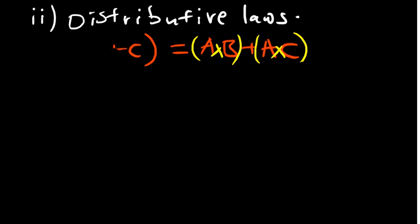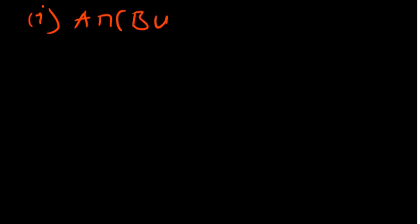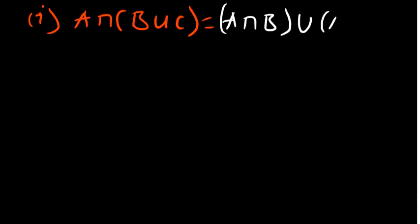I'm going to show one distributive law and you can work on the other one. For the first distributive law, we have A intersection B union C on one side, and on the other side A intersection B, union A intersection C. I'll start with the left hand side. For A intersection B union C, I advise starting with what is in the brackets. We have B union C, and in this case we have three different sets.